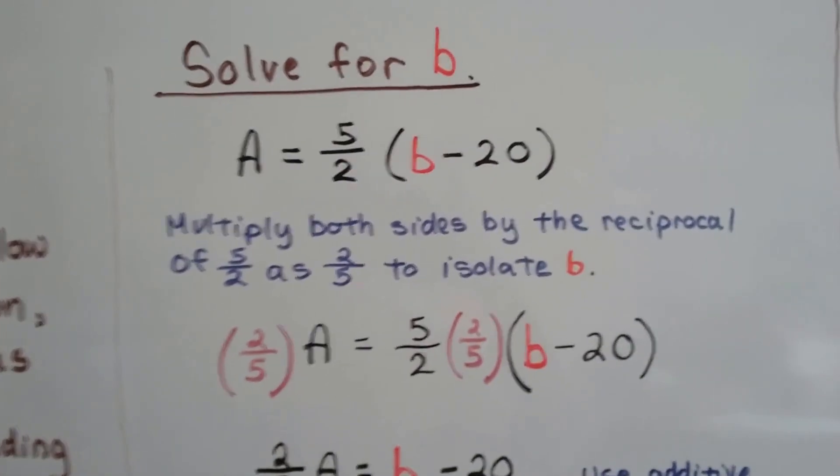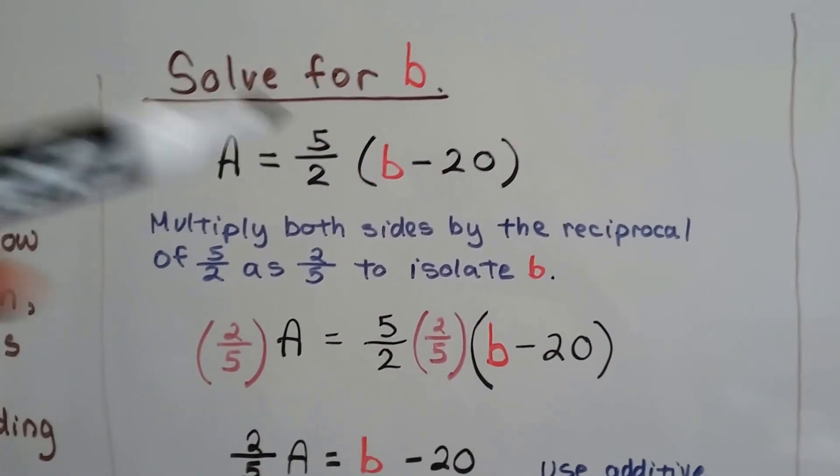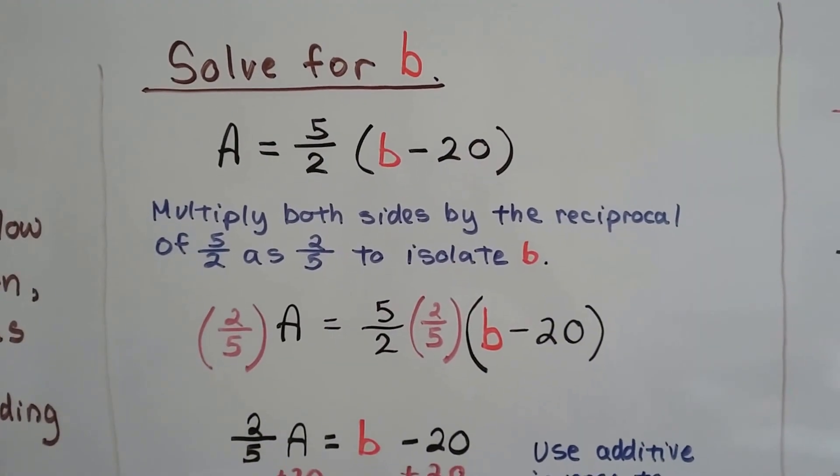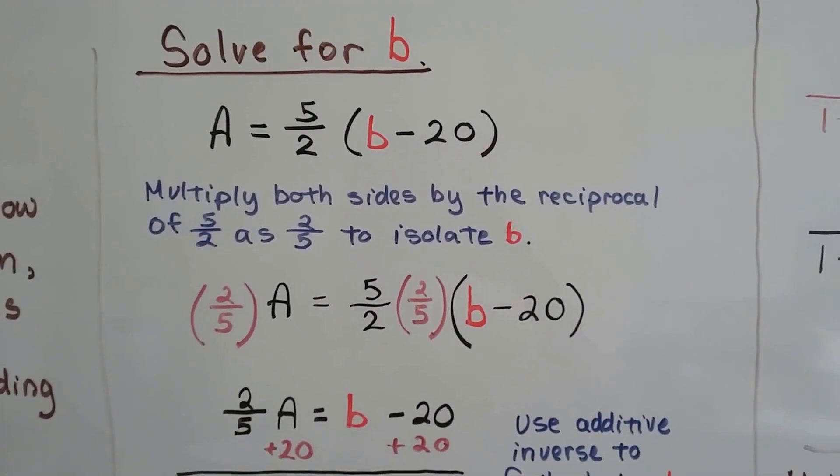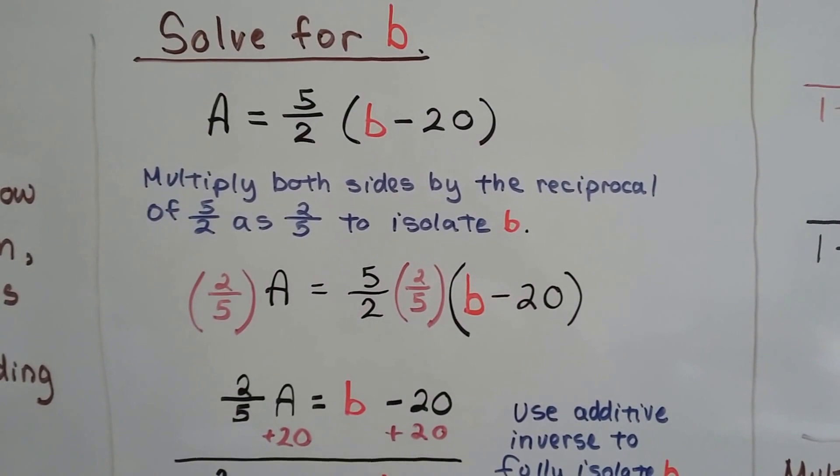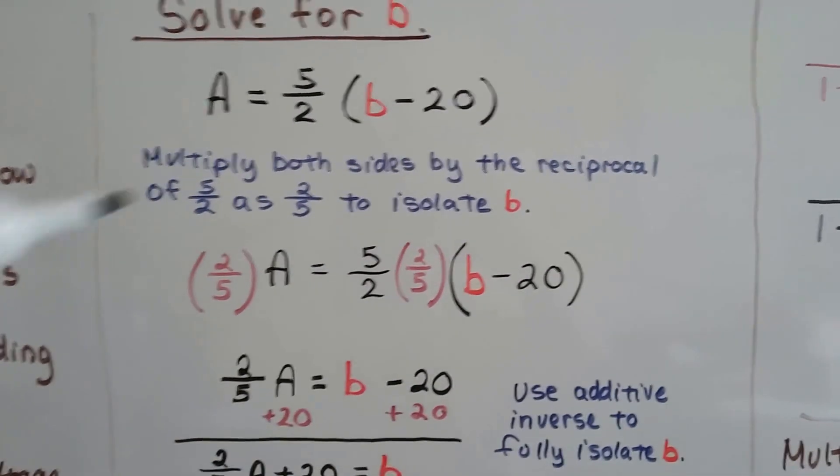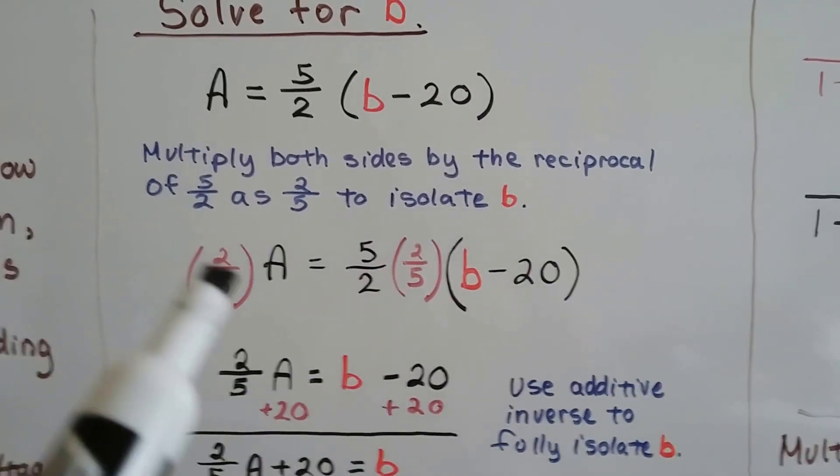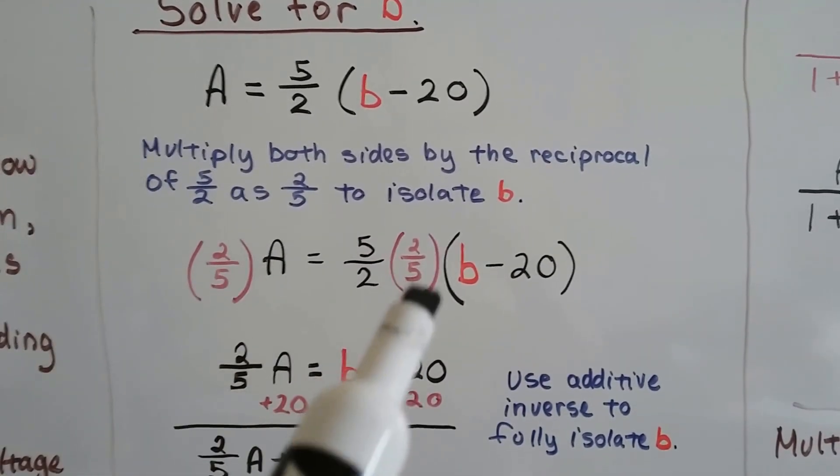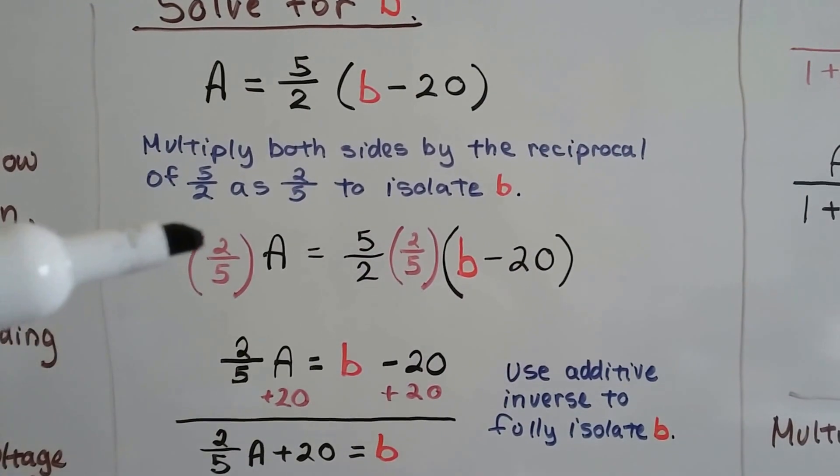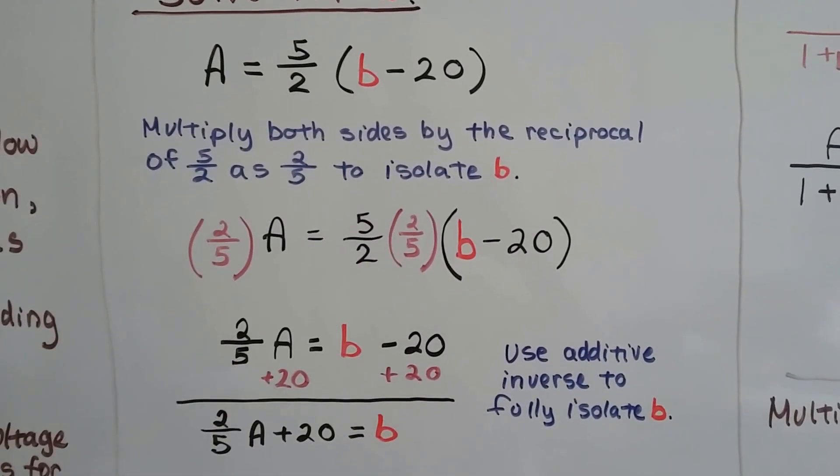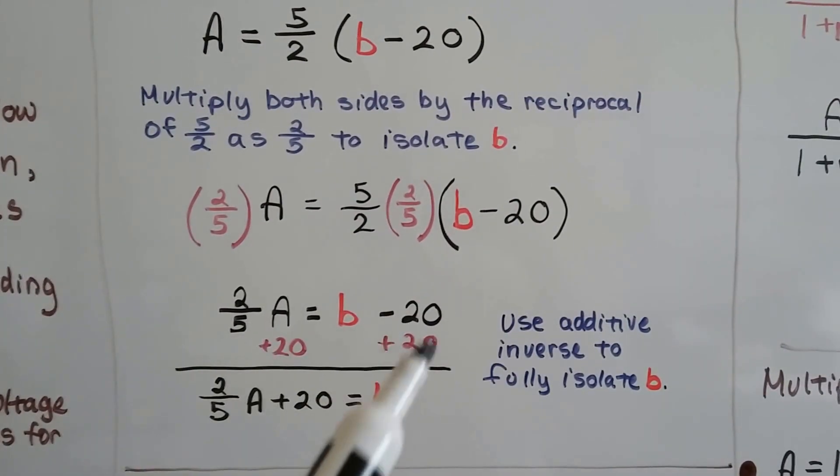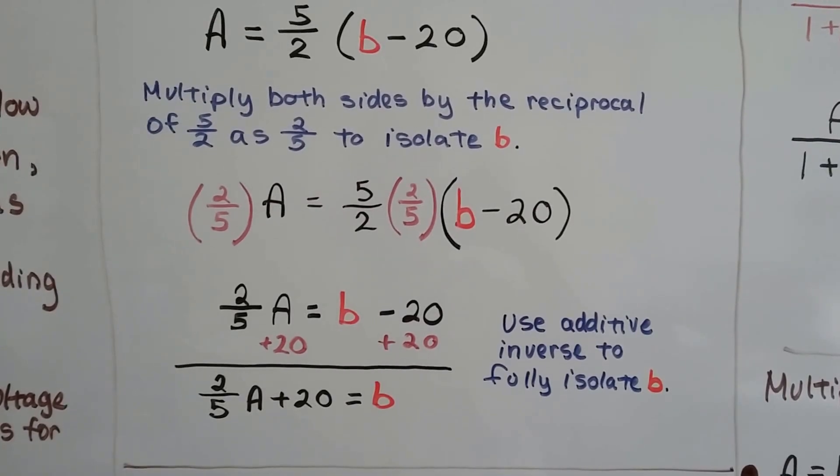So take a look at this. If we need to solve this for B, we've got this fraction here. So instead of dividing each side, we're going to multiply both sides by the reciprocal of 5 halves as 2 fifths. And that's going to help us start isolating that B. It won't do it completely, but it's going to get us on the road. So we multiply both sides of the equation by that reciprocal of 5 halves as 2 fifths, and we get 2 fifths A equals B minus 20. Now we can add 20 to each side to make a zero pair here and totally get B by itself.